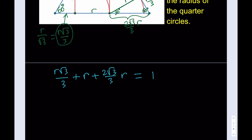What are we supposed to do? We're supposed to solve for R. Let's go ahead and do that. And notice that we can actually factor out an R here. Let's do that. If we do, we get root 3 over 3 plus 1 plus 2 root 3 over 3.